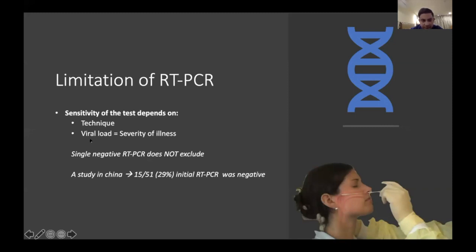The false negatives are probably related to two factors: first, the swab technique — it must go all the way to the posterior nasopharynx and be done correctly. Second, viral load — patients with milder symptoms likely have lower viral loads, leading to a higher rate of false negative results.